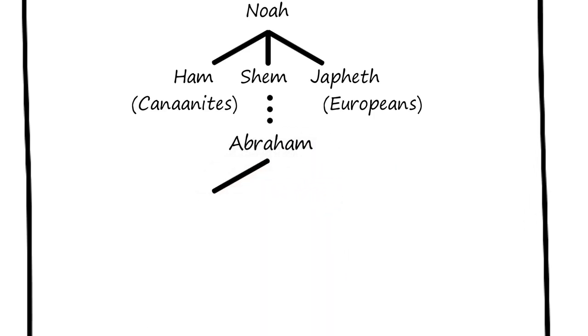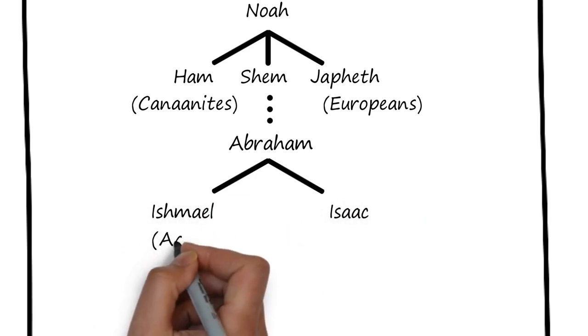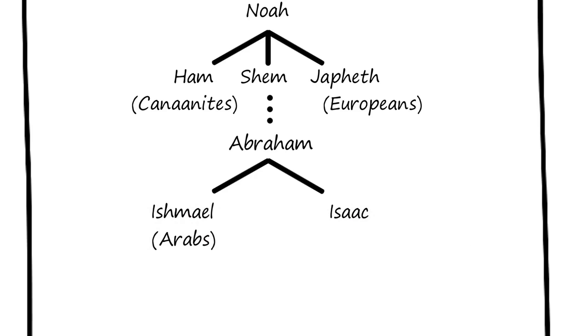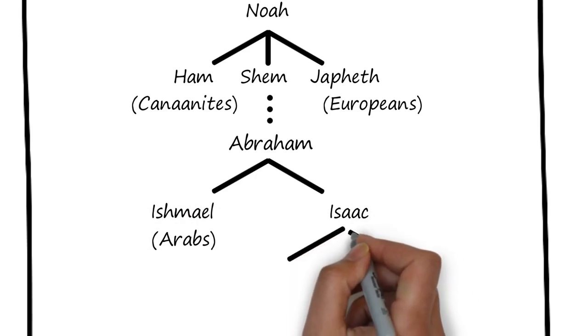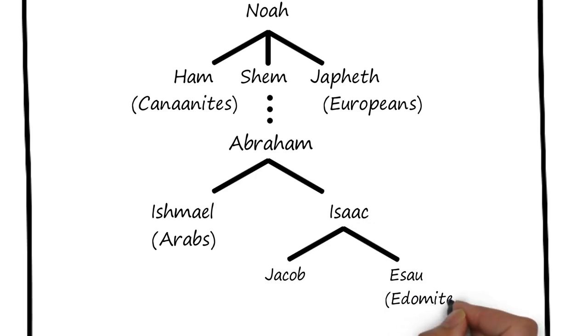We're remembering the first two of Abraham's sons, Ishmael and Isaac. Ishmael became the father of the Arab people. And Isaac had two sons, Jacob and Esau. Esau became the father of the Edomites, and Jacob became the father of the people of Israel.